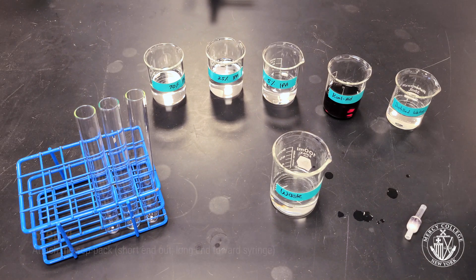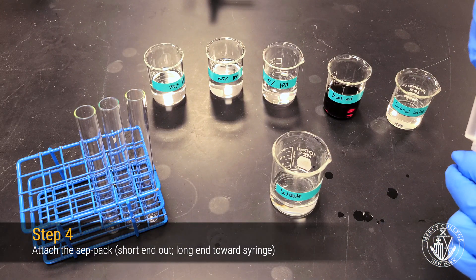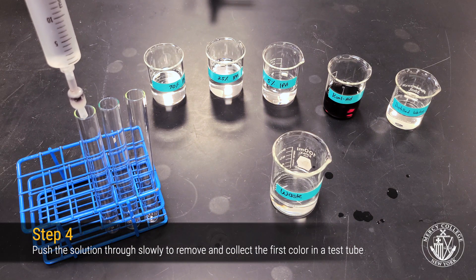After you've drawn up the 5% IPA solution, reattach the CEPPAC column, again making sure the long end with the propyl coloring is facing toward the syringe.